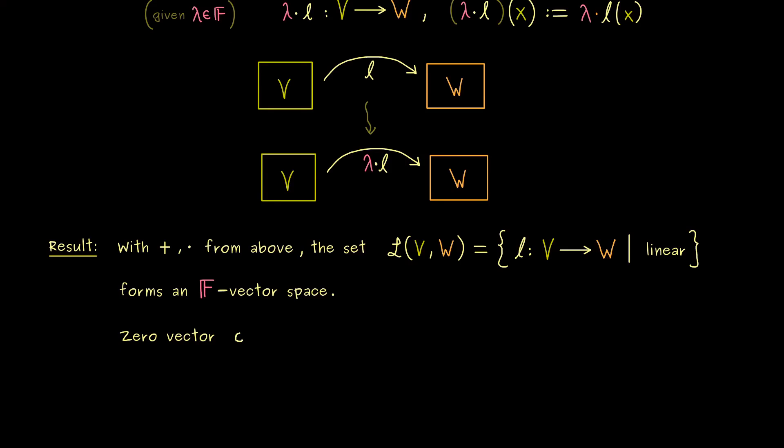More precisely, the zero vector also has to be a linear map. More precisely, it has to be the zero map, which sends every vector x in V to the zero vector in W. Indeed, this is something you should always keep in mind: we have different zeros in different vector spaces. So this is our result. We can check that all the eight rules for a vector space are satisfied for our linear maps.